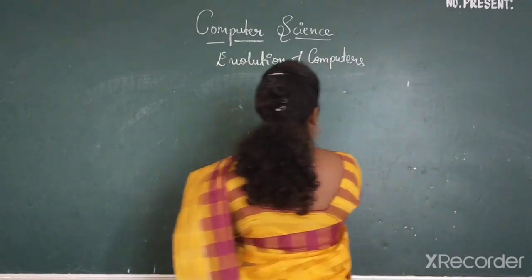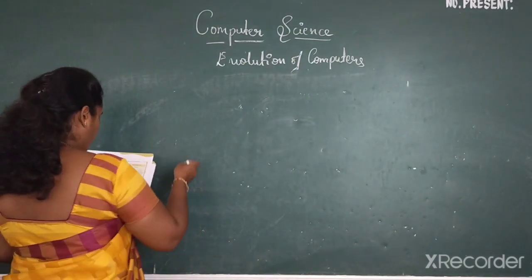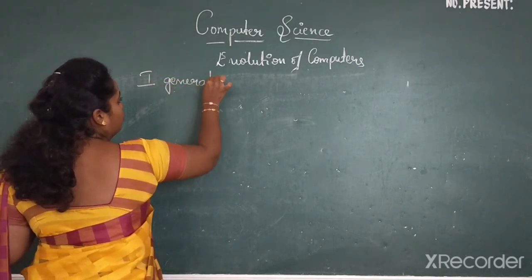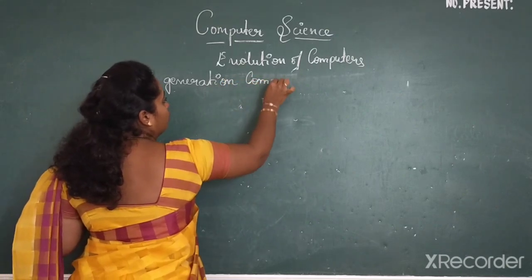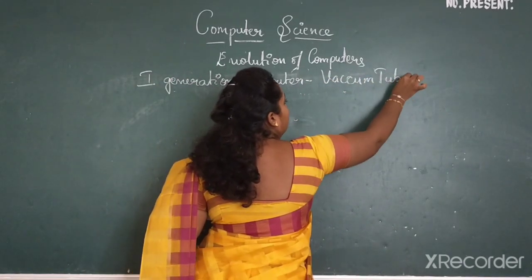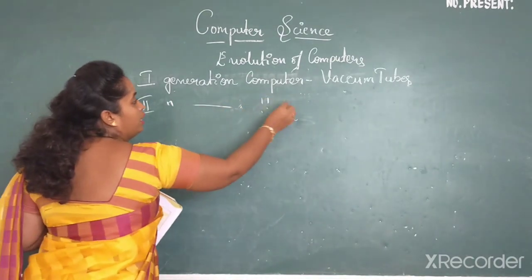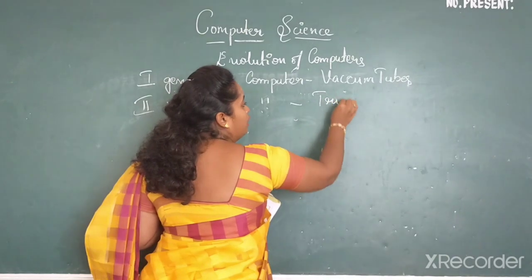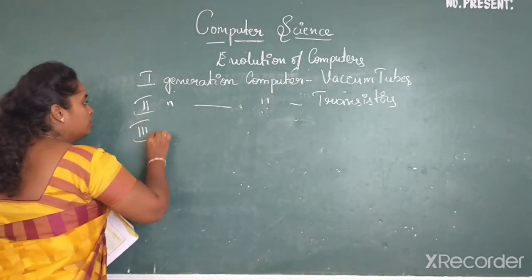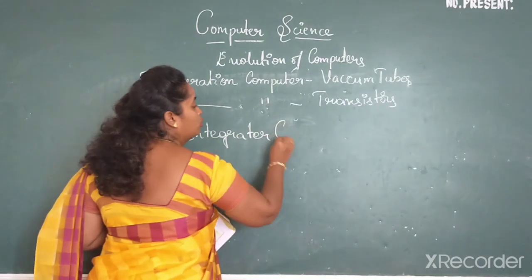The first generation computer, vacuum tubes were used. UNIVAC and ENIAC were the first generation computer. Then next comes your second generation computer wherein transistors were used. Then third generation, integrated circuits were used.